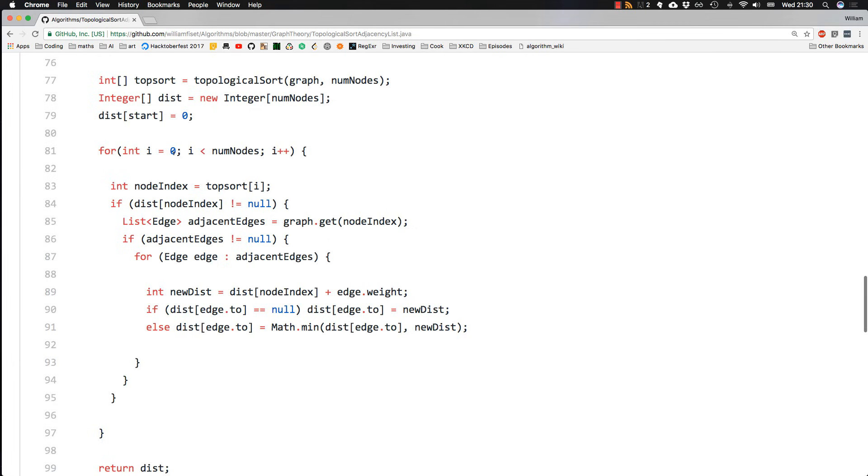Starting at the first node, looking at what our node index is for top sort. So this is the first node we need to visit. And then check if that node is not equal to null.